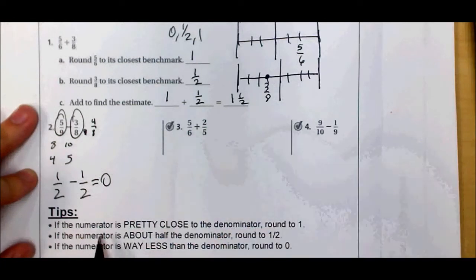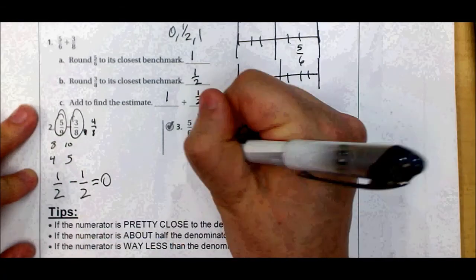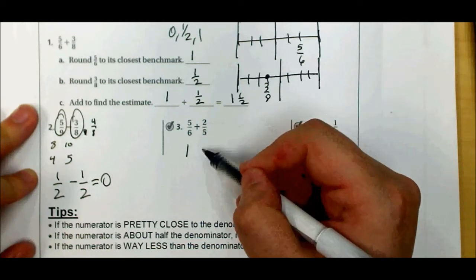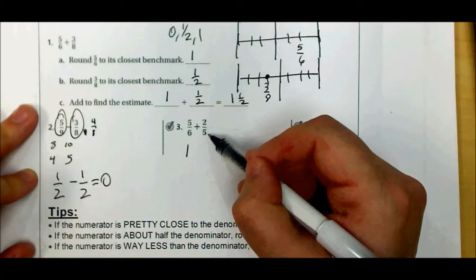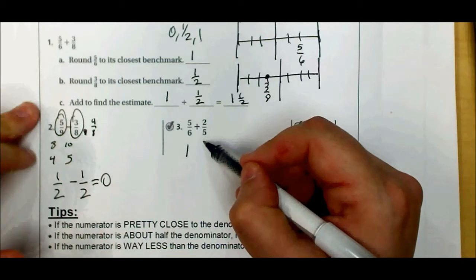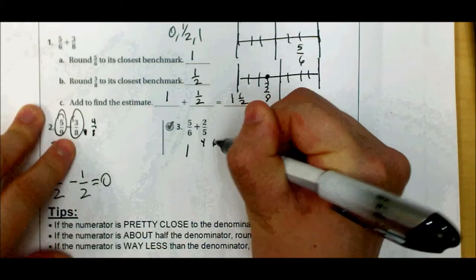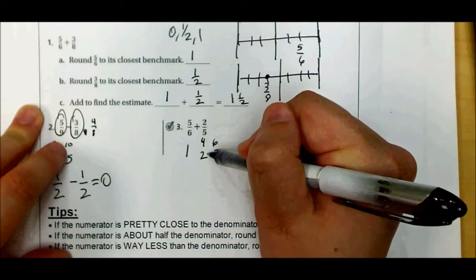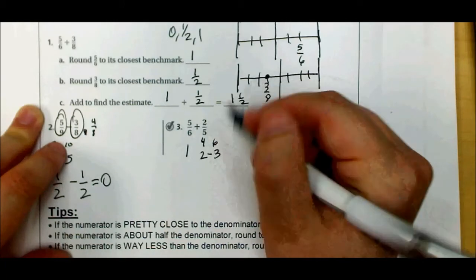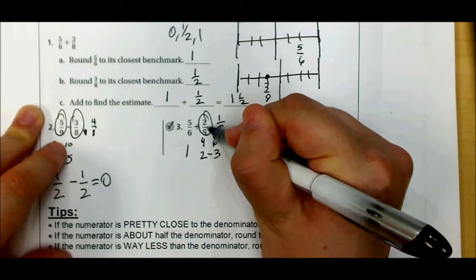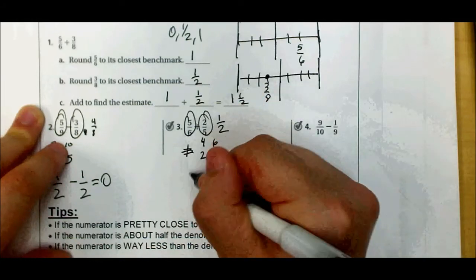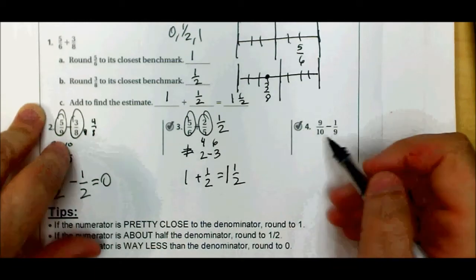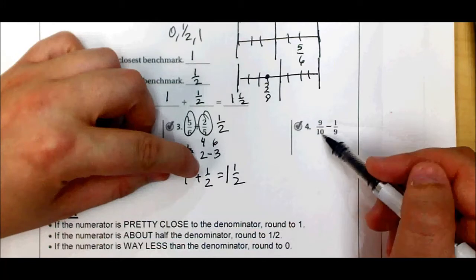Five-sixths: the numerator is very close to the denominator — five is close to six — so I can round that to one. Now two-fifths is tricky. Two is not close to five, and this is not a one. What's half of five? If you can't see that it's two and a half, look at four and six: half of four is two, half of six is three. Half of five would be somewhere between two and three, and two is in that range, so two-fifths is about one-half. So one plus one-half gives us one and one-half.